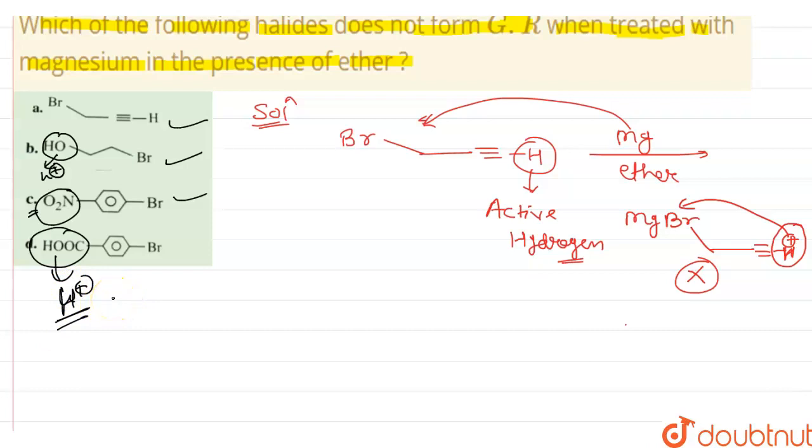Release H+ ion, so we do not get Grignard reagent here either. So options A, B, C, and D all are correct. I hope it is clear to you. Thank you very much for class 6 to 12th, IIT-JEE and NEET level.